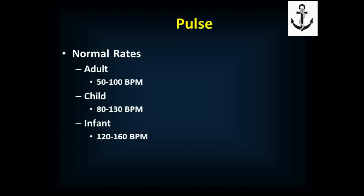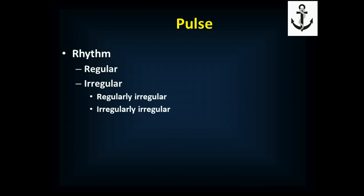Normal pulse rates for an adult are given as 60 to 100 beats per minute — though in practice a heart rate down to 50 in an asymptomatic patient is not concerning. In a child, 80 to 130; in an infant, 120 to 160 beats per minute. When you check a pulse, you want to feel the rhythm — it's either going to be regular, regularly irregular, or irregularly irregular.